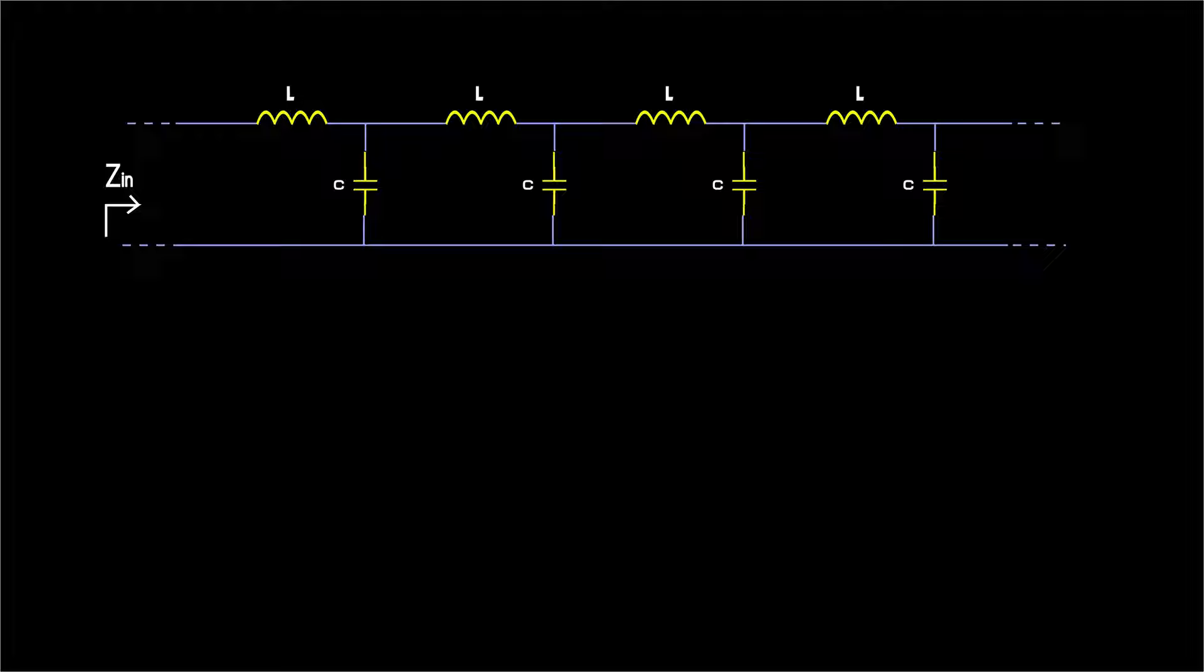Now, we started with lossless elements, inductors and capacitors, and ended up with real impedance. Does that mean that the lossless transmission line dissipates energy? Actually not. The circuit is made up of lossless components.